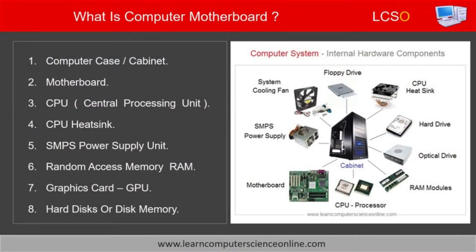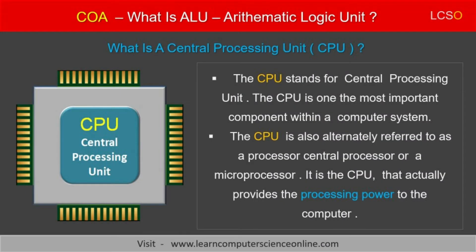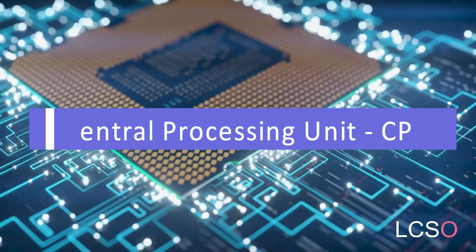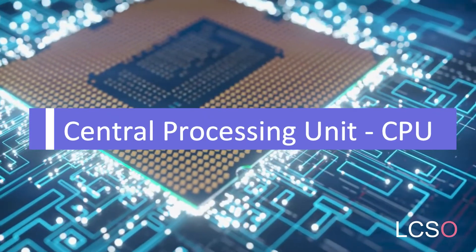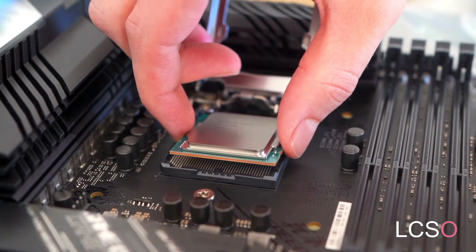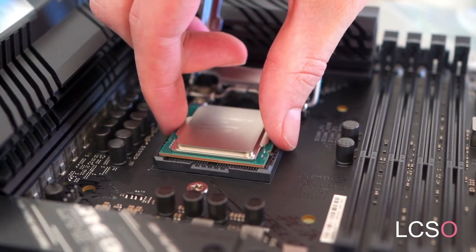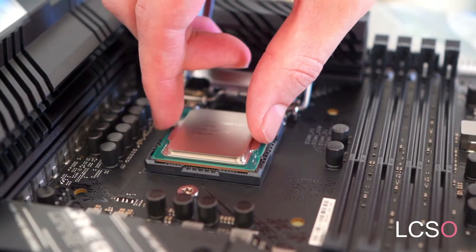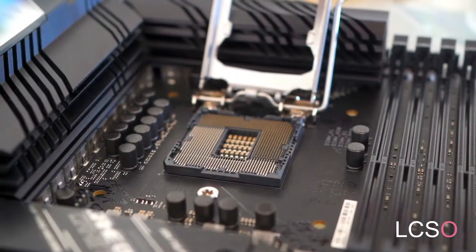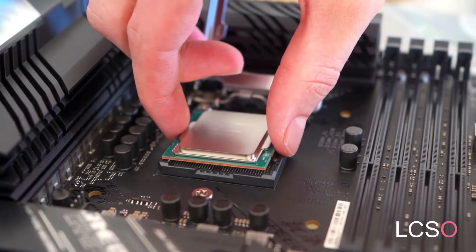The first component installed on the motherboard is a microprocessor, also referred to as the central processing unit or CPU. The CPU is the brain of the computer and provides the processing power to perform various operations. The microprocessor chip is installed on the motherboard into a specific socket that is provided with a mechanical lever lock mechanism. The CPU socket is specially designed to firmly hold the microprocessor chip.